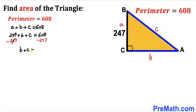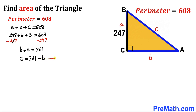So b plus c equals 361. Moving b to the other side, we can write c equals 361 minus b. Let's call this equation number one.